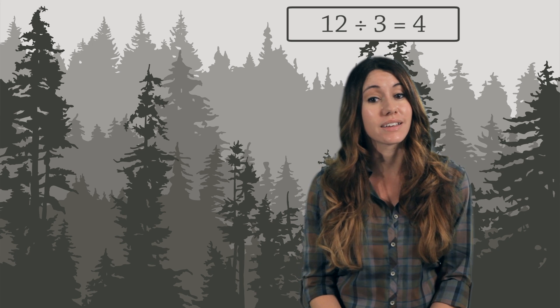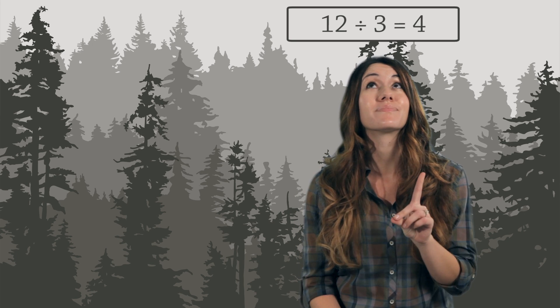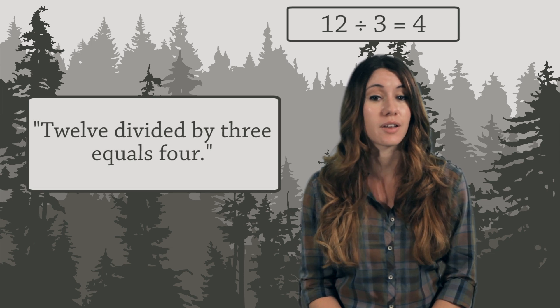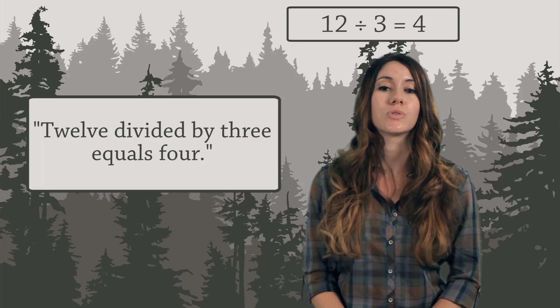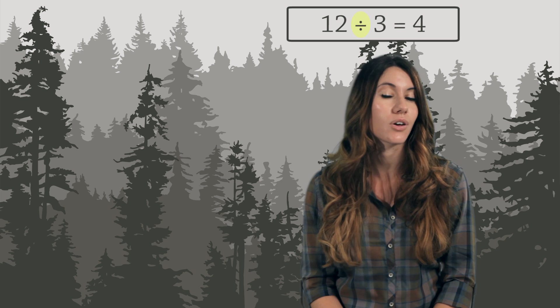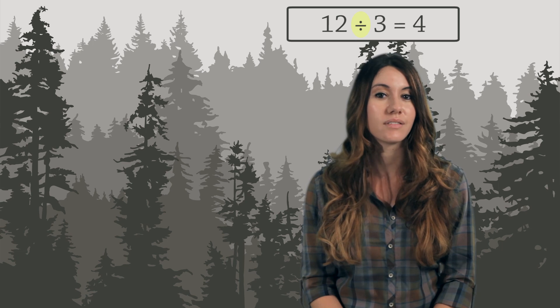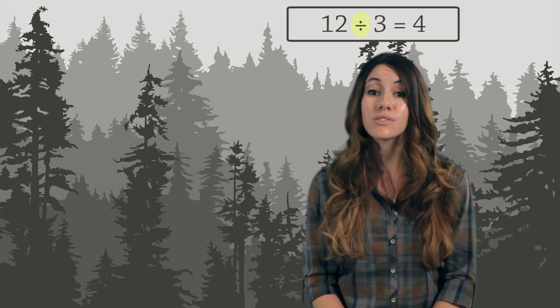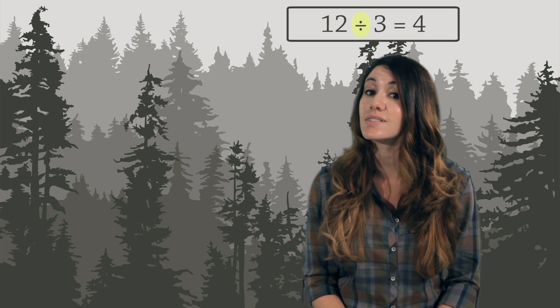We divided 12 slices of pizza among three people and everyone got four slices. We write this mathematically like this. We say this aloud as 12 divided by 3 equals 4. That symbol with two dots is called the division sign. You can also call it the division symbol.